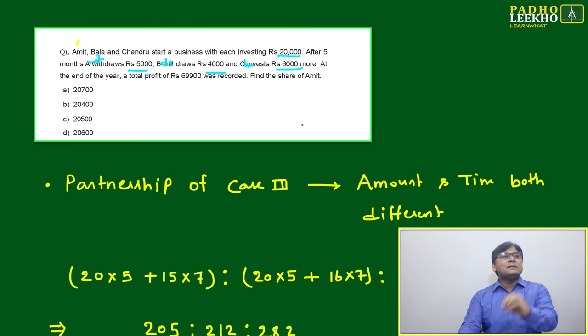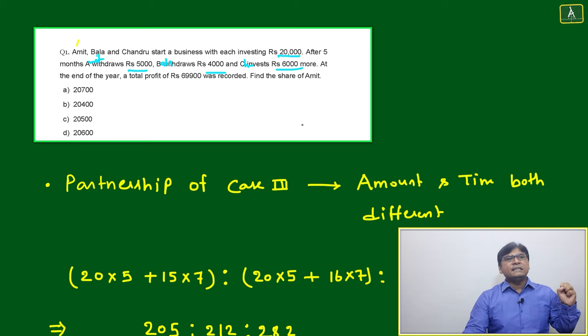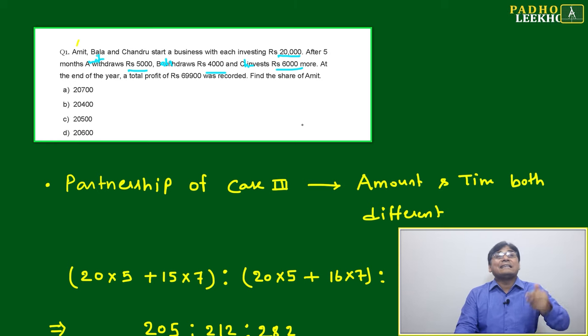Means Amit and Bala are both withdrawing money, Chandru is putting in money other than initial money.